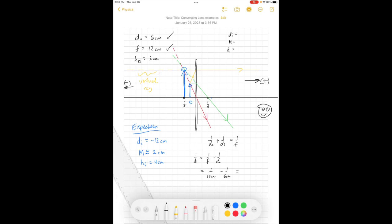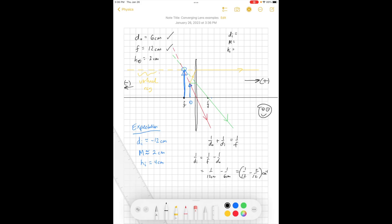1 over 6 is the same as 2 over 12, so this is like 1 over 12 minus 2 over 12 in the units of inverse centimeters. And what that works out to be is minus 1 over 12 centimeters. And I take the inverse of both sides, and that tells me that DI is in fact minus 12 centimeters. So we actually got that one pretty good.